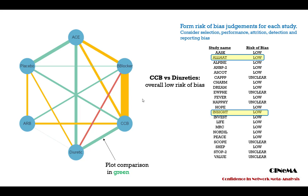However, the odds ratio between CCB and diuretics also includes indirect information from other studies, some of which are at high risk of bias. Additionally, how are we going to make judgments about study limitations for the comparison ACE versus ARP? No studies have directly compared these two treatments.